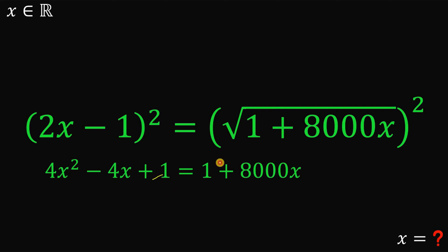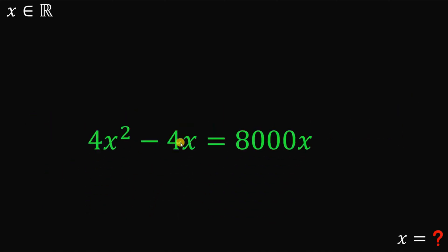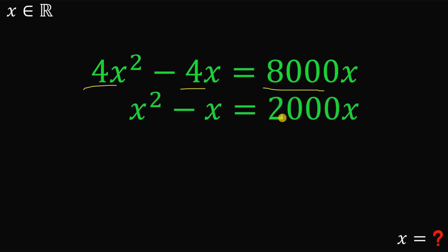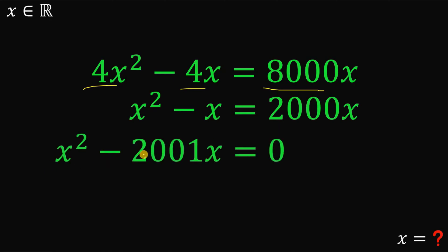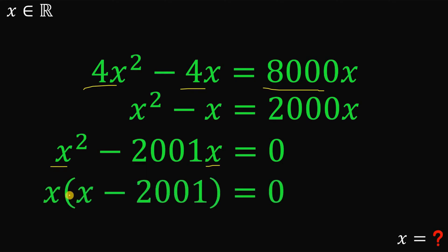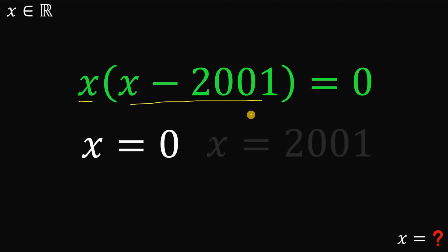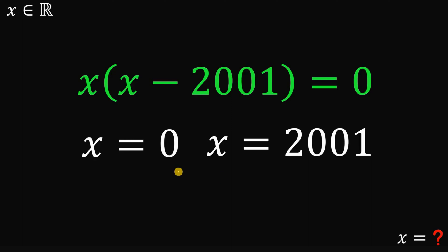Subtracting 1 from both sides gives 4x squared minus 4x equals 8,000x. Dividing all terms by 4 gives x squared minus x equals 2,000x. Subtracting 2,000x from both sides gives x squared minus 2,001x equals 0. Factoring out x gives x times (x minus 2,001) equals 0. Therefore x equals 0 or x equals 2,001, giving us two candidate values.